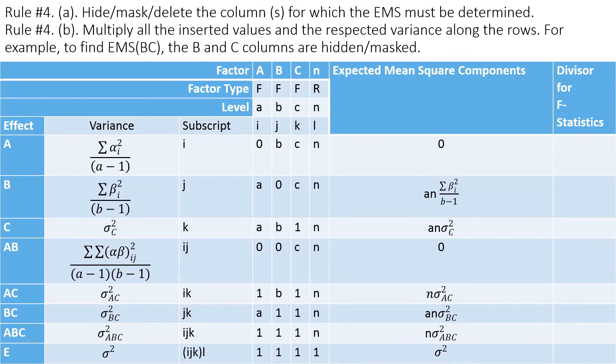The next rule is to multiply all of these. So multiply this variance column, and then this column, this one, this one, this one. So if you multiply all of them, that's 0. So if you multiply this, beta square times A times 0. Now we have to mask this. So if you want to find BC, for example, we have to mask this BC or delete BC.